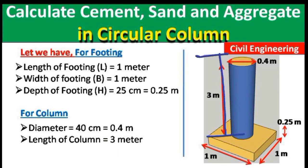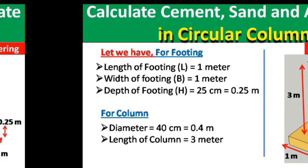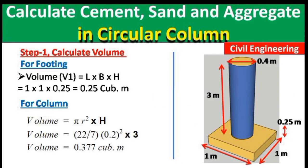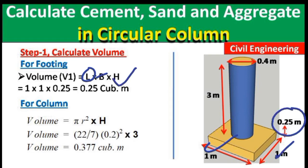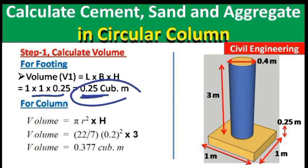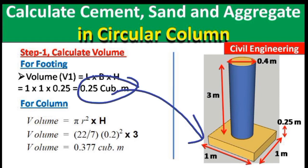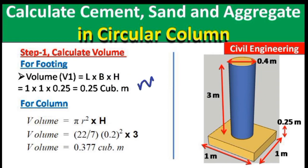In Step 1 we calculate the volume of both the footing and the column. For the footing, since it is cubical, the volume formula is L × B × H. Substituting L = 1 m, B = 1 m, H = 0.25 m, we get a volume of footing = 0.25 cubic meters.